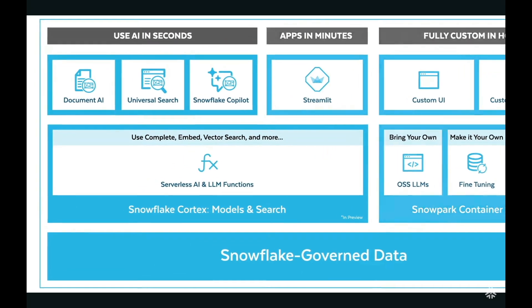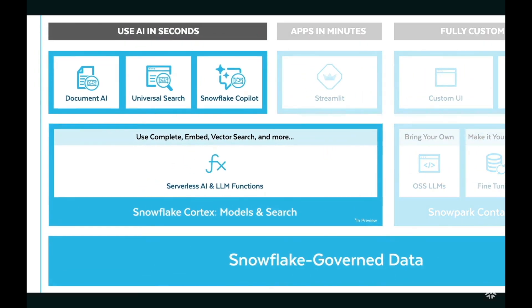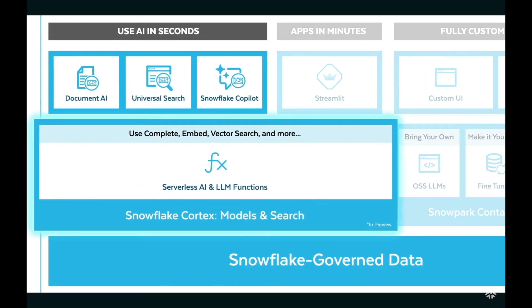Snowflake Cortex is essentially a collection of AI and LLM functions which can be called from within the Snowflake environment. Crucially, these functions work on top of your clean, secured and governed data which already exists in Snowflake, and they can be called with no specialist machine learning skills — you don't need to be a data scientist to use them. On top of the suite of tools within Snowflake Cortex, there are three different services: Document AI, Universal Search and Snowflake Copilot.